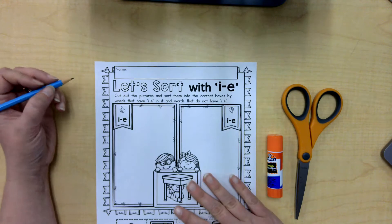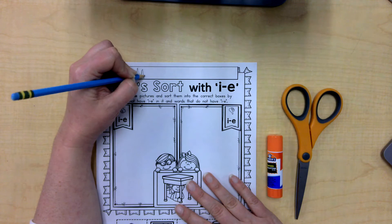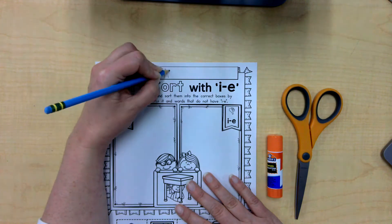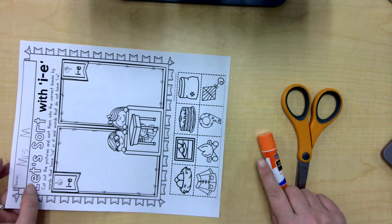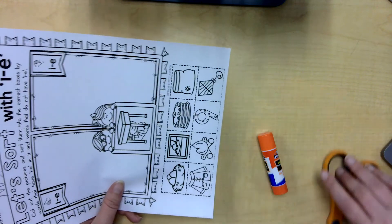So the first thing I need to do is always the same. I have to write my name. Here's my name, Mrs. Meansuper. Okay, I've got out my scissors and my glue and let's do some cutting.